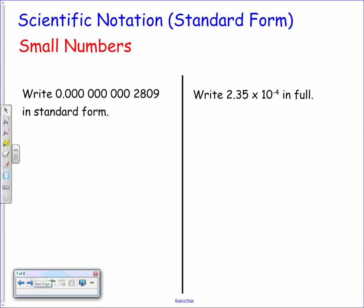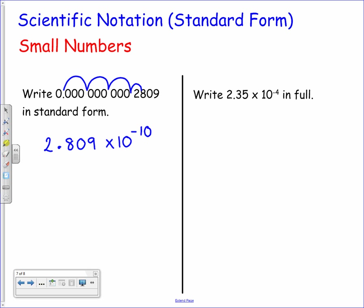The same thing applies for small numbers. This time we want to write 0.0000000002809 in standard form. We place the decimal point between the first two non-zero digits, moving in the opposite direction, giving us 2.809. Since it's a small number, we'll have a negative power. Counting the places — 3, 6, 9, and once more — gives us a power of negative 10, so that's 2.809 × 10^-10.